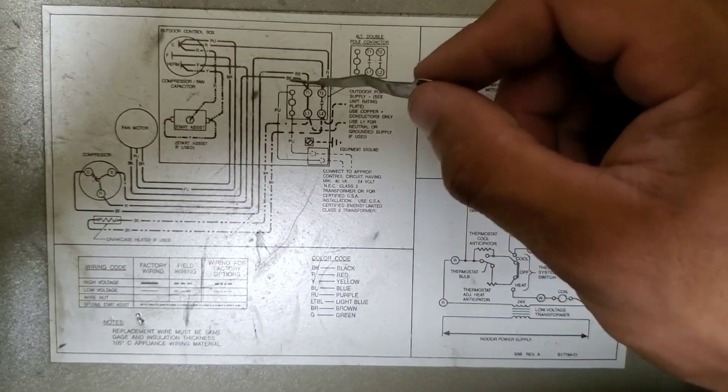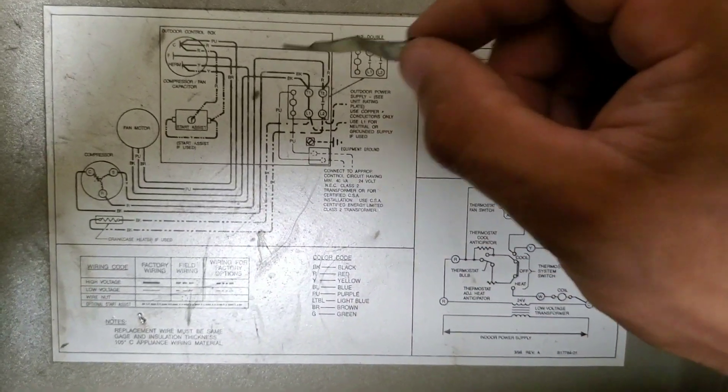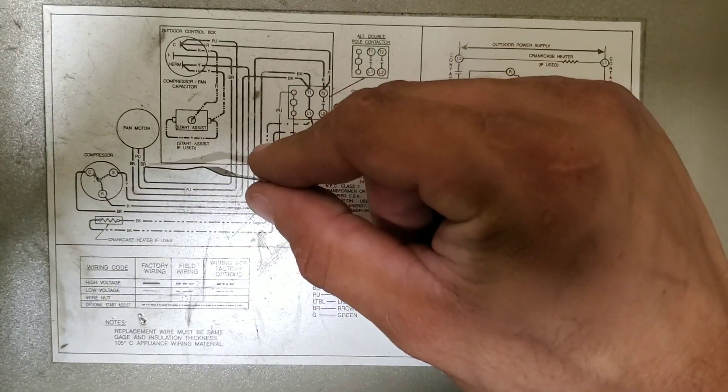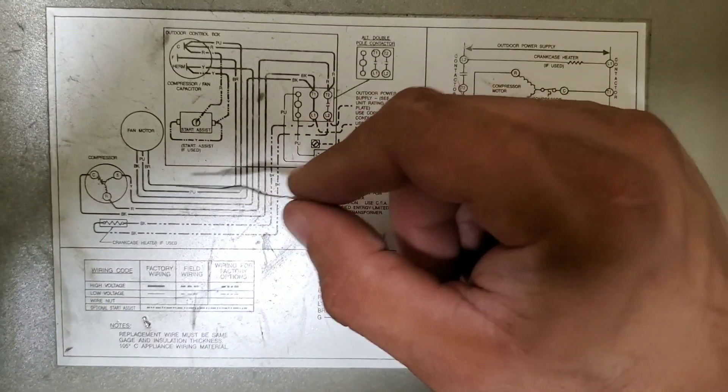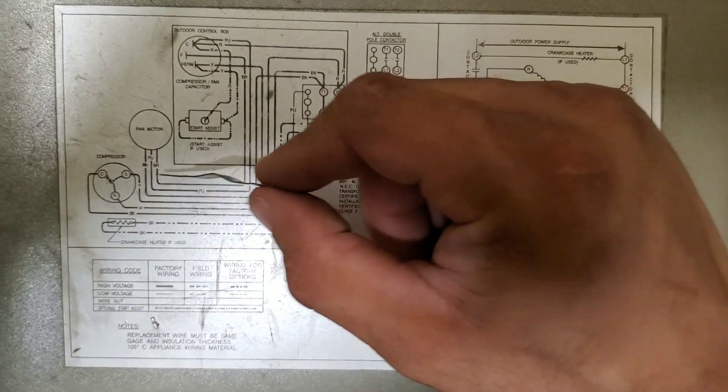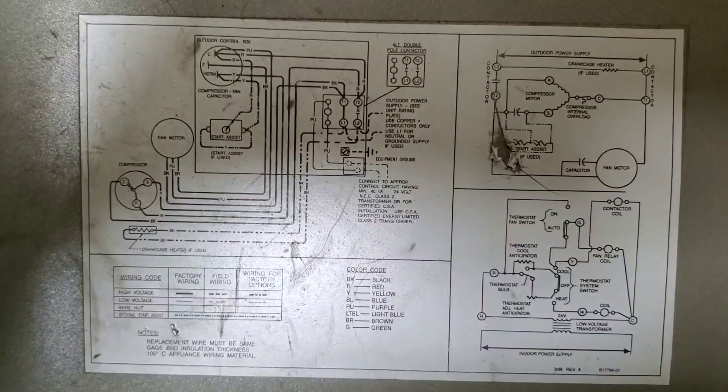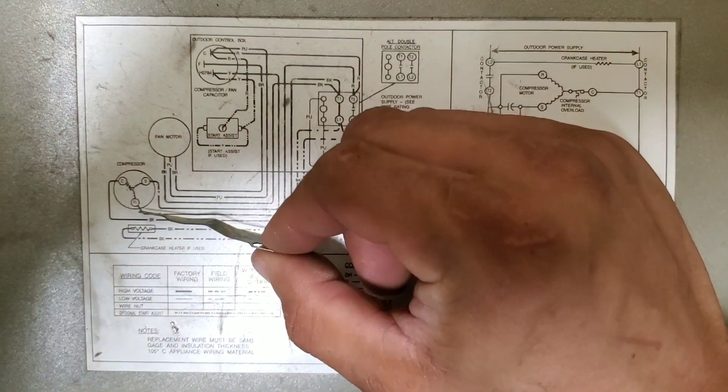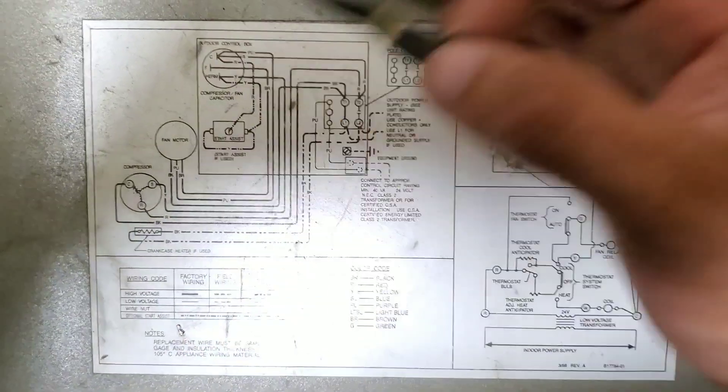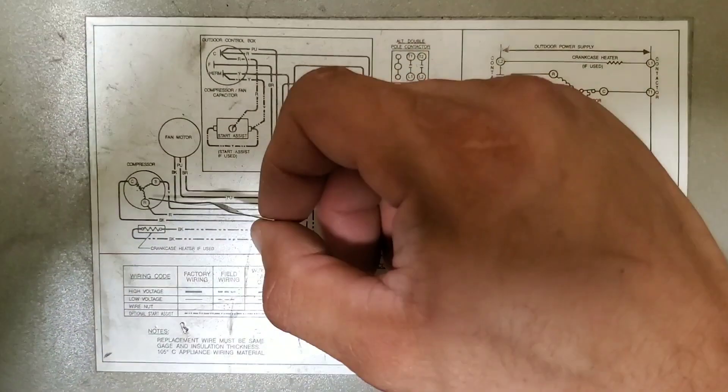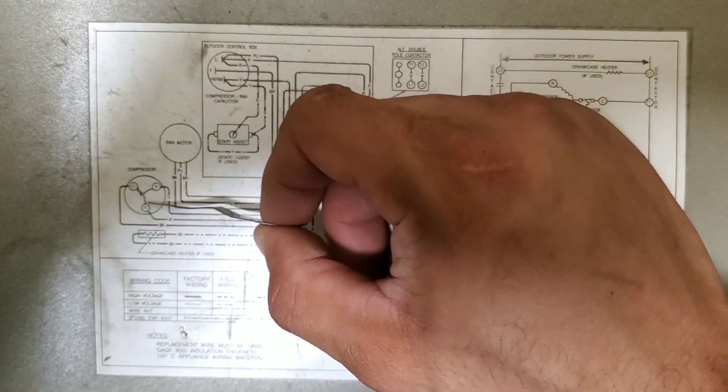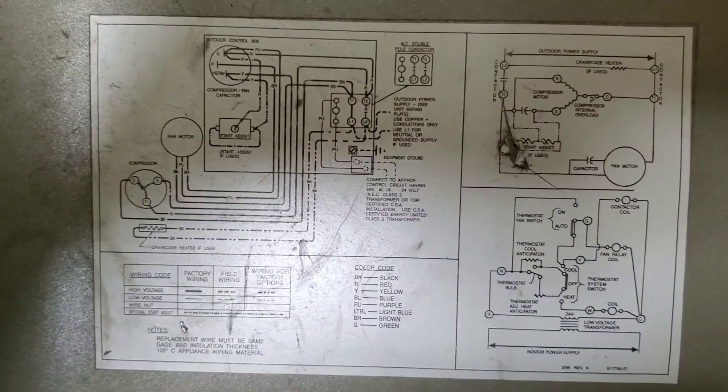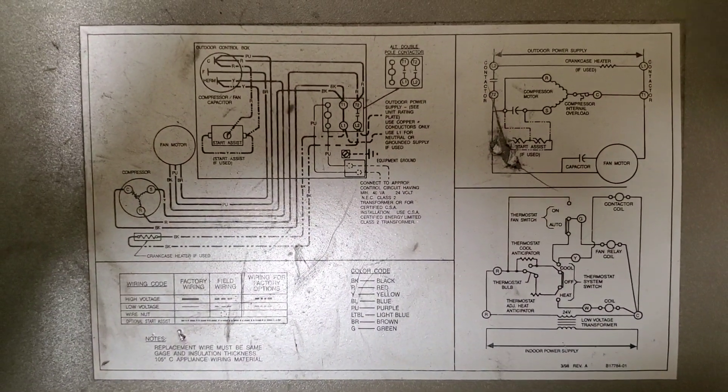This is why I try to discourage guys from learning or training to do it based off the coloring of the wires, because you don't know who did what before you got there. Your default for your mind and troubleshooting should always be to check the schematics. The schematics will tell you, it doesn't matter if you put one, two, or three compressors within 10, 15, 20 years - the schematics are always going to stay the same.